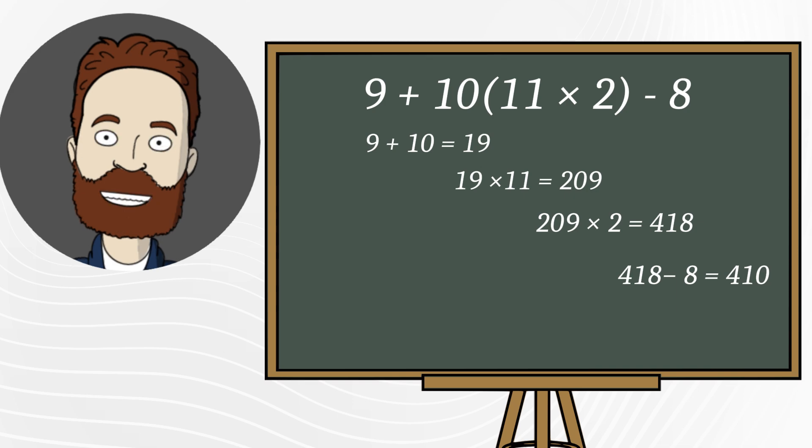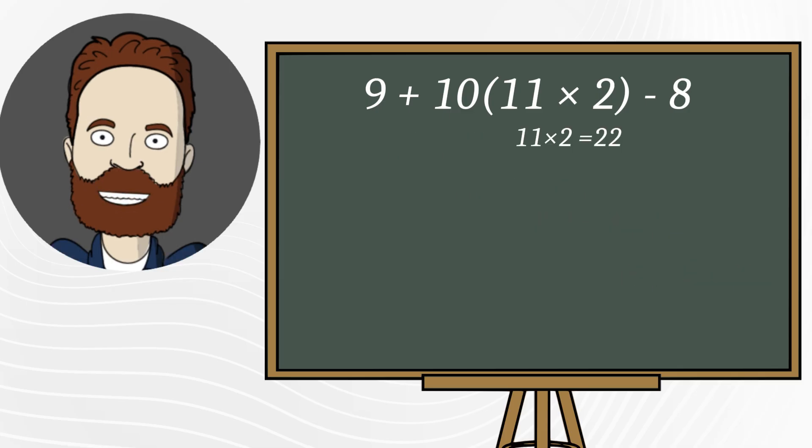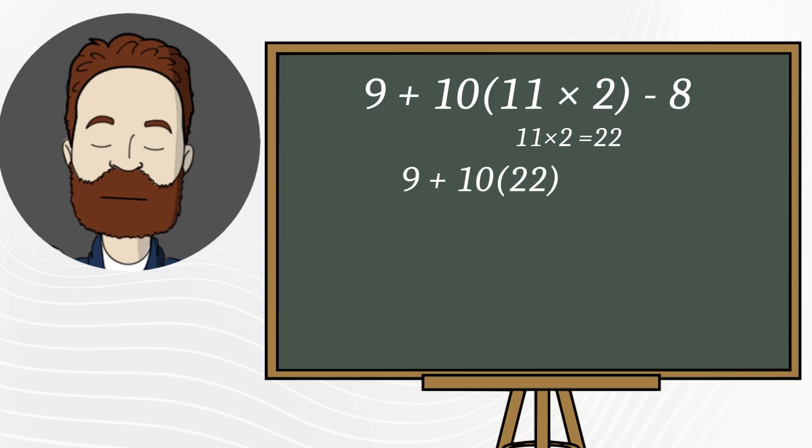First, we solve what's inside the parentheses, 11 times 2, that equals 22. So now the expression becomes 9 plus 10 times 22 minus 8.